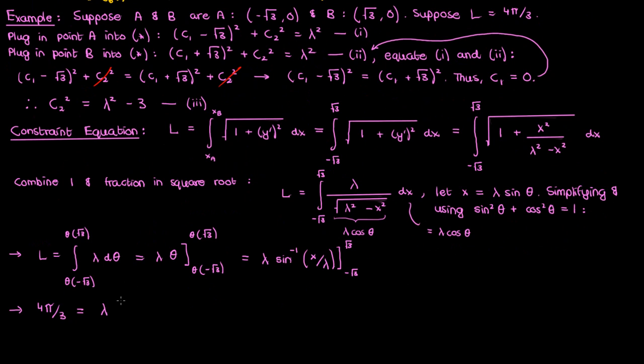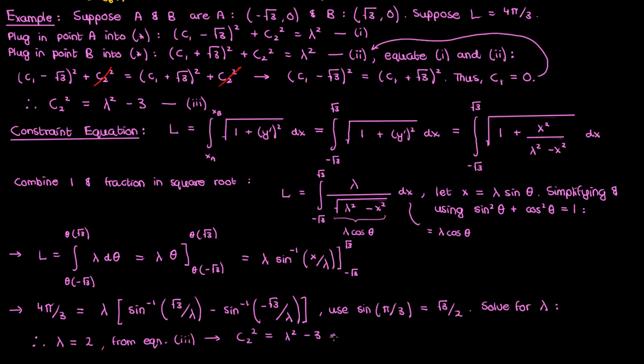Now it's kind of hard to analytically solve this kind of equation involving arcsine for lambda but if you use the high school fact that the sine of 60 degrees or pi by 3 is square root of 3 over 2 then you'll believe me when I say that the solution to this equation is lambda equals 2. If I go back to equation 3 then I'll find that my c2 is plus or minus square root of 1 so either positive 1 or negative 1. But which one is it?